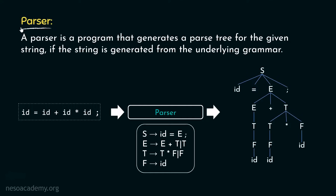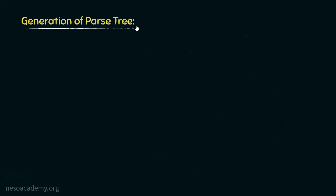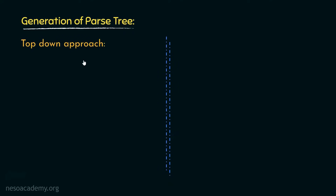A parser is a program that generates a parse tree for a given string if the string is generated from the underlying grammar. The generation of the parse tree can be done in two ways: the first one is the top-down approach, and the second one is the bottom-up approach.